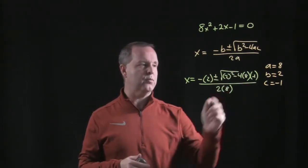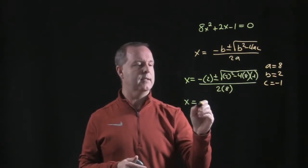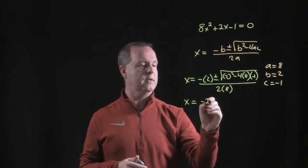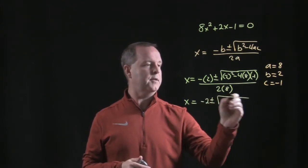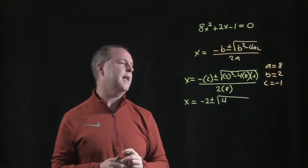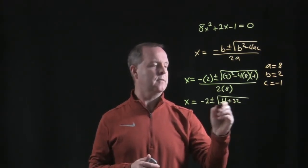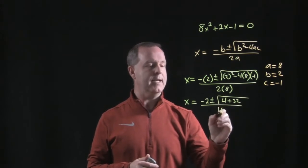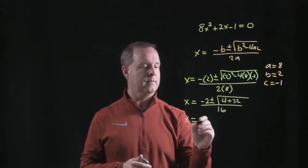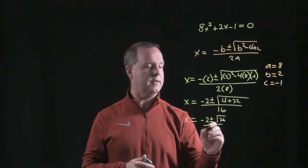Now it's simply going through and just reducing it down. And this might take a couple of steps, but we can do it. So negative 2, plus or minus, underside I have a 4, minus a 4 times 8 times a negative 1 is a positive 32, all over a 16, square root of 36, all over 16.